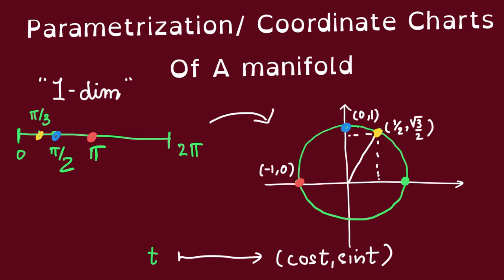The one-dimensionality of the circle manifests itself in the fact that we only need to use one coordinate. This map gives us one way to give coordinate on this circle. Since this point here was identified with 0, we can give this coordinate 0. And then this can be thought of as pi over 3, this is pi over 2, this is pi, and so on.